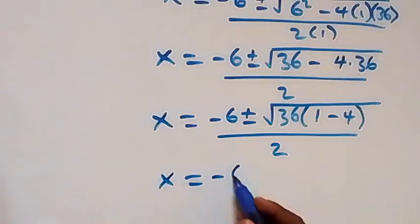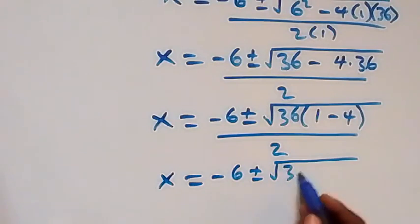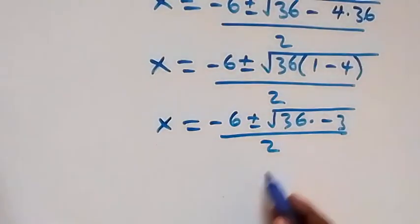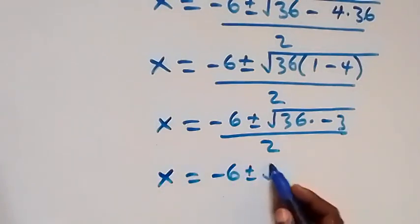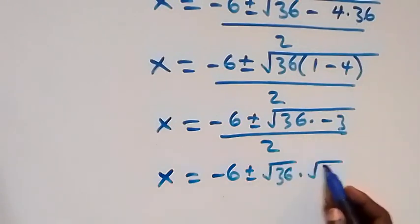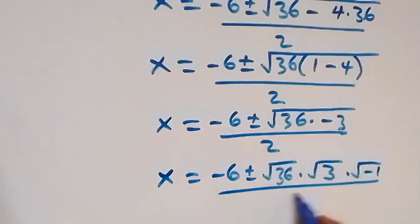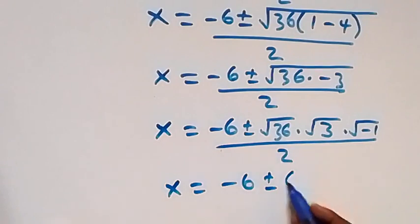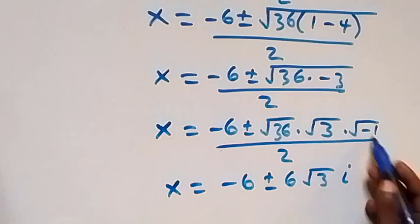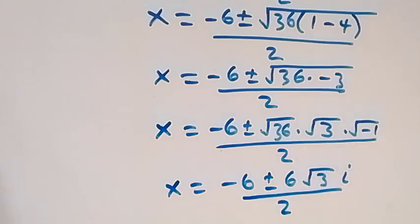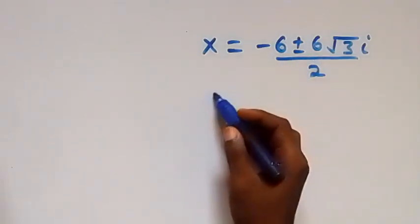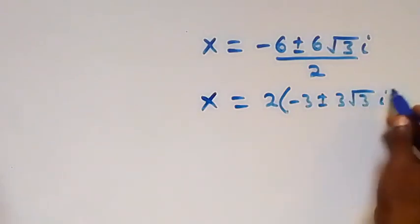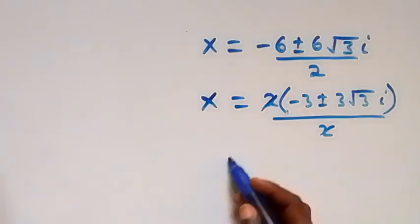This becomes x equals negative 6 plus or minus square root of 36 times negative 3, over 2. Separating the roots: square root of 36 is 6, and square root of negative 3 is root 3 times i. So we have negative 6 plus or minus 6 times root 3 times i, over 2. Factoring out 2, we get x equals negative 3 plus or minus 3 root 3 i.